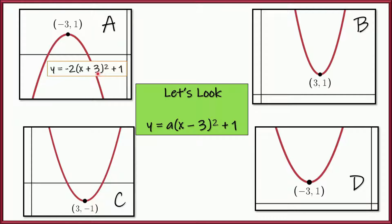But this graph's equation — x plus 3 — doesn't quite match our target equation, which says x minus 3. The plus ones work, and a could be anything, so negative 2 isn't a problem. That means the vertex at negative 3 comma 1 doesn't quite match. It's really close — the 1 is the same, but x plus 3 gives a vertex x-coordinate of negative 3, not positive 3.